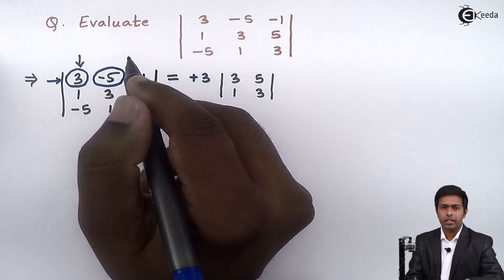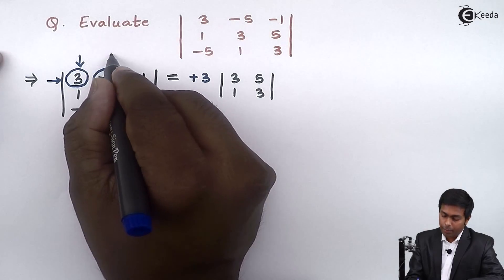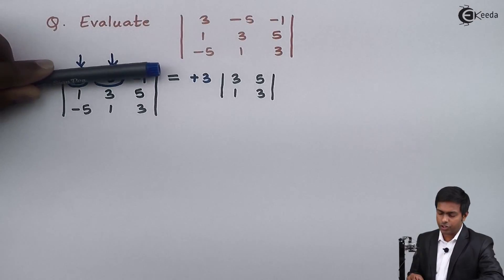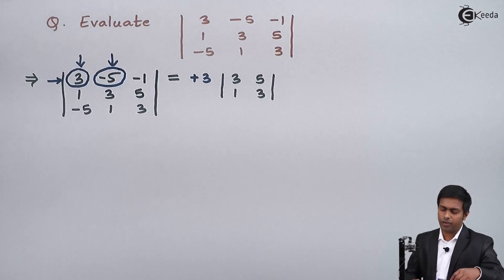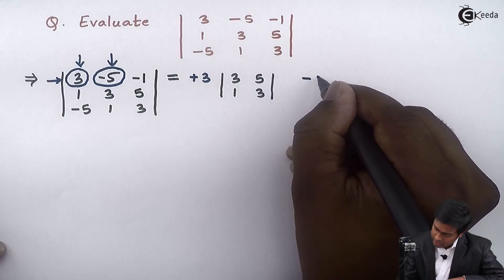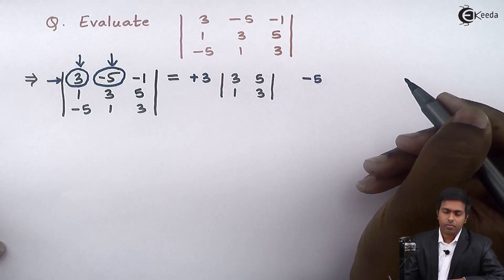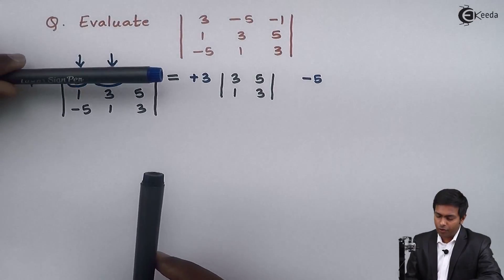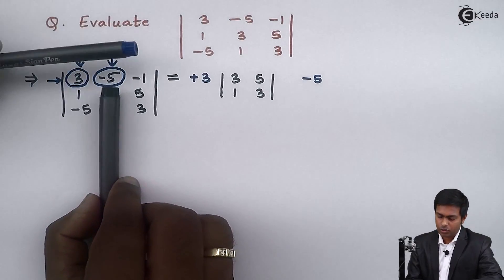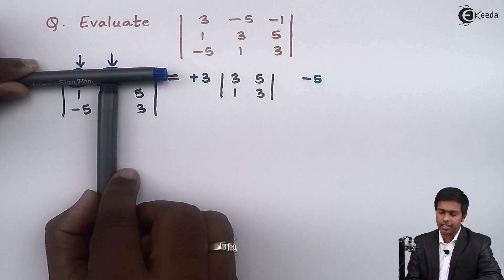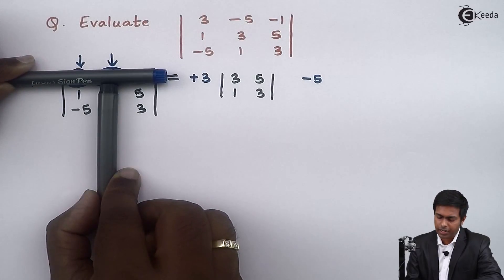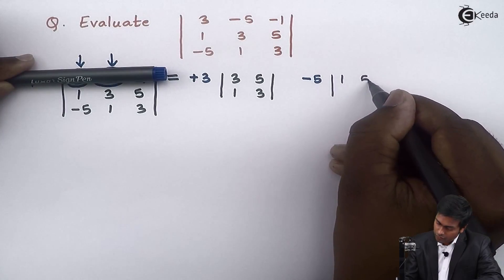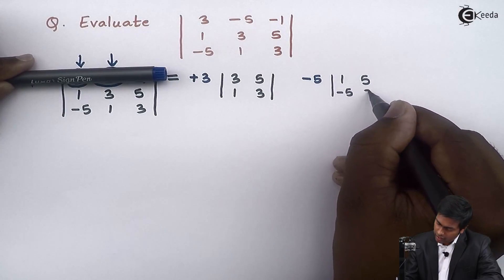The element -5 is in the first row but second column. We copy down -5, then hide the first row and second column. After hiding, the 4 visible elements are 1, 5, -5, and 3. So we find the determinant of 1, 5, -5, 3 and multiply it with -5.